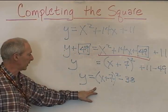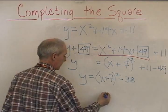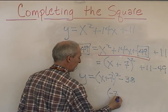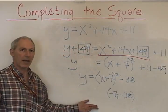And there's our problem, there's our vertex form. The vertex is at, remember it's the opposite sign, it's at (-7, -38). Okay, there you have it.